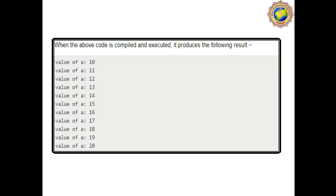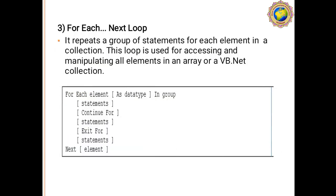Now let's start the third loop concept — the For Each Next loop. We'll see how to use the For Each Next loop in VB.NET (Visual Basic .NET) and how it performs with practical program code. The For Each Next loop repeats a group of statements for each element in a collection. This loop is used for accessing and manipulating all elements in an array or a VB.NET collection.